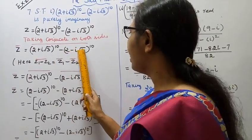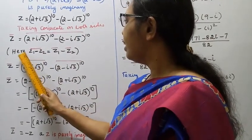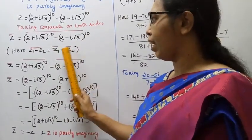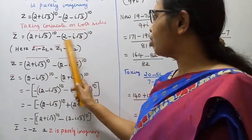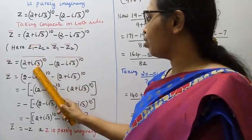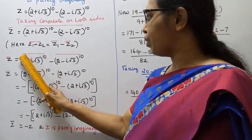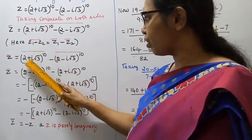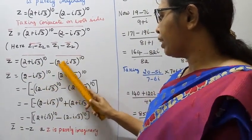Taking the conjugate, we use the conjugate formula. z̄ equals the conjugate of the whole expression. The conjugate bar of z̄ gives us: the bar of (2 + i√3)^10 minus the bar of (2 − i√3)^10, which equals (2 − i√3)^10 minus (2 + i√3)^10.